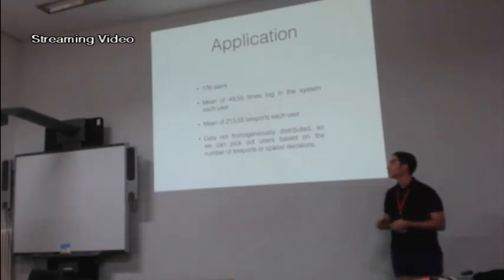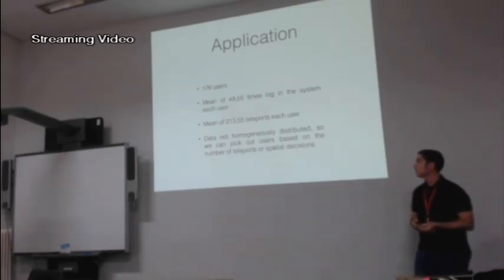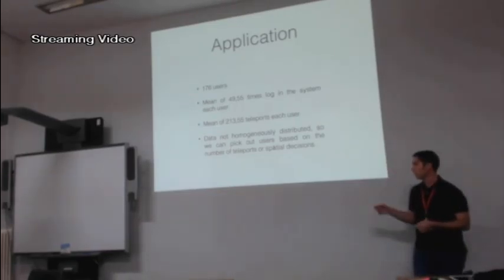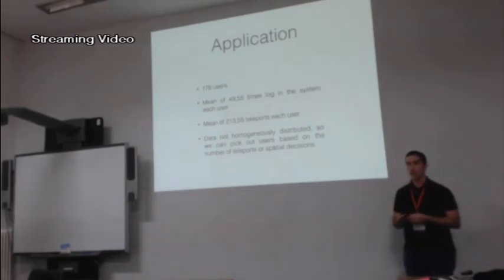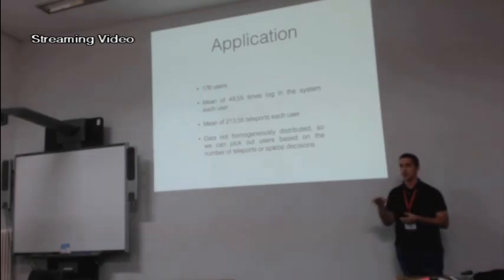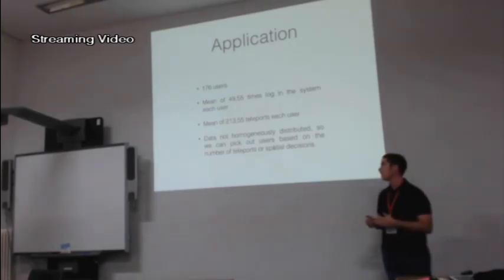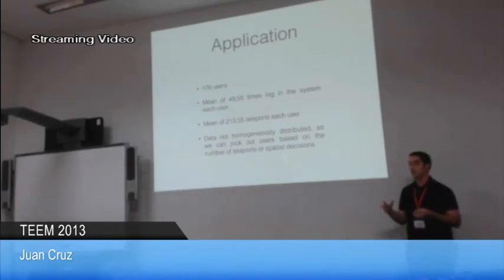Each user also averaged 214 teleports, and the data is not homogeneously distributed. So we can pick out users based on their number of teleports and spatial decisions. This gives us knowledge about how users are engaged in the virtual world and how users make decisions — if a user gets upset with the virtual world, they simply don't use it.